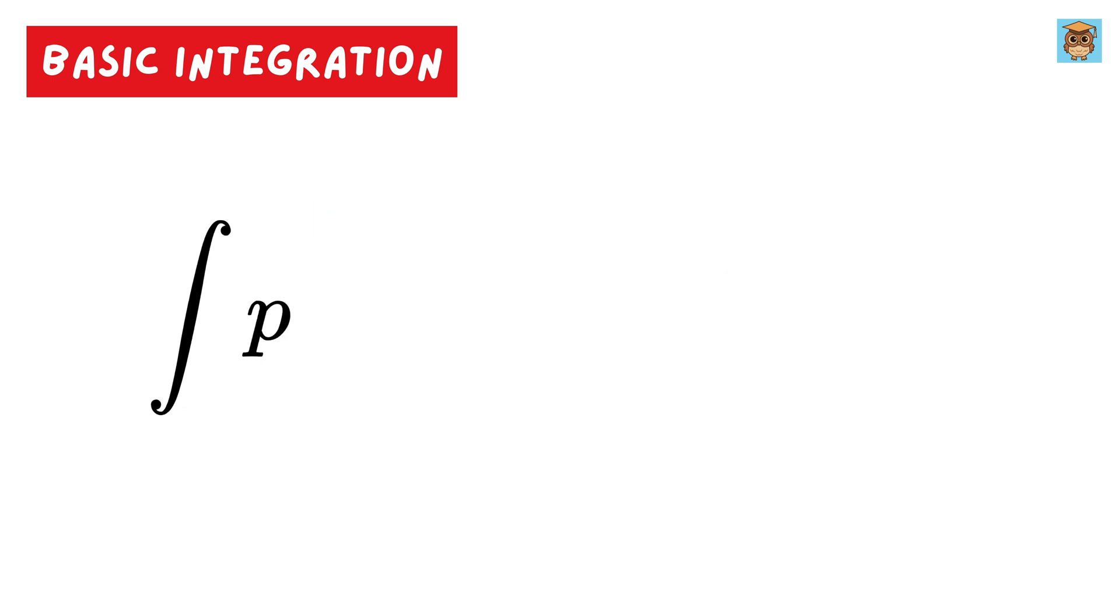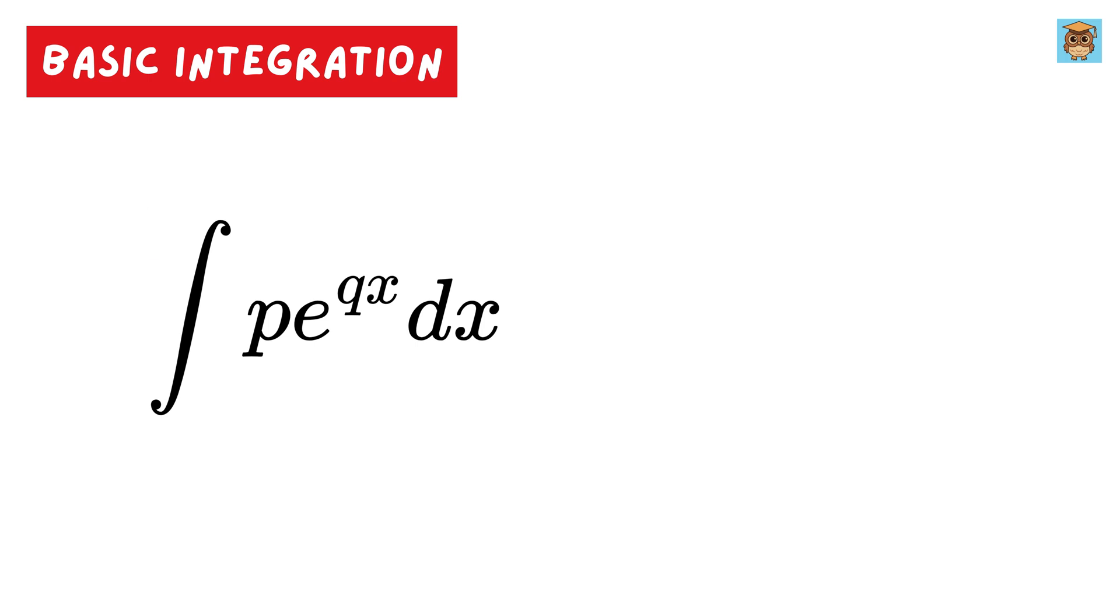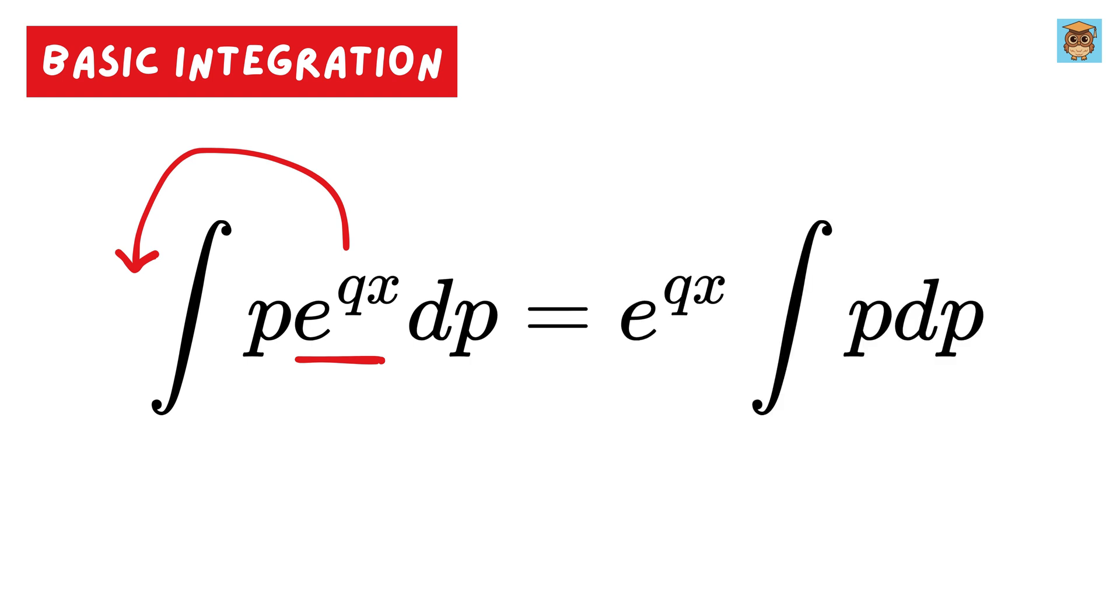So for example, if we have an integral of p times e raised to qx dx, we can take this p outside, but not e raised to qx, as this p is considered as a constant, which is independent of x. But suppose if we make this integral dependent on p, like this becomes dp, then we can simply take e to the qx outside of this integral, because now this term acts as a constant which is not dependent on p, but we cannot take this p outside. Simple enough, right? Let us proceed.